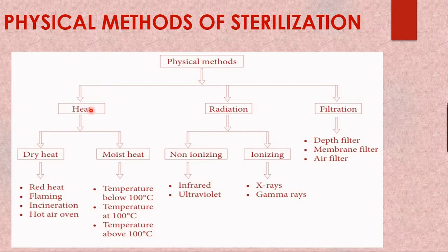Looking at the overall flowchart of physical methods of sterilization: physical methods include heat, radiation, and filtration. Dry heat includes red hot, flaming, incineration, and hot air oven. Moist heat sterilization is also called steam heat sterilization — when water converts into vapor it is called steam, and that steam is used in the sterilization process.